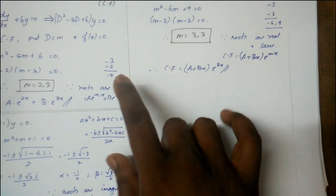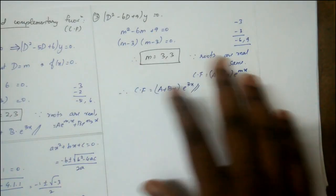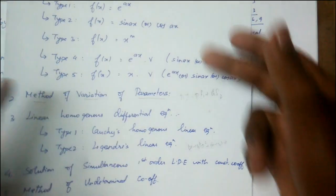These are the three types: roots are real and different, roots are imaginary, and roots are real and same. All three will be used throughout.